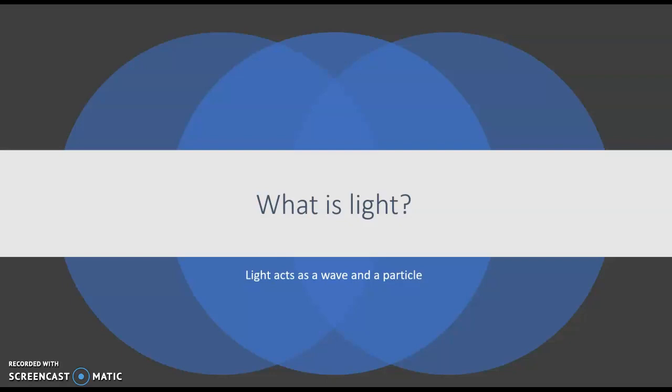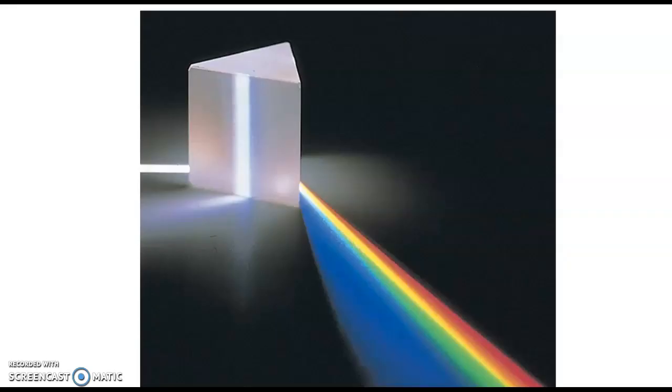Light acts as a wave and a particle — you might hear that in a chemistry or physics course. A wave has certain properties and a particle is like a little package, and light can act as both of those things. There is also visible light and not visible light.